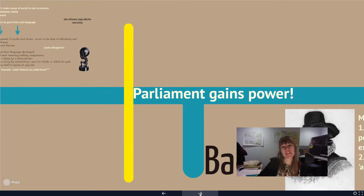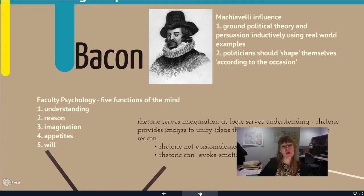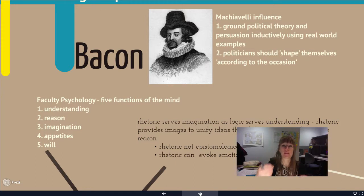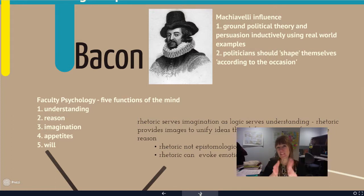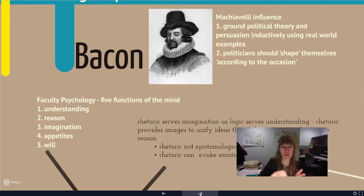Parliament begins to gain power, so we've got people running the government again. Now we need to understand how people function for very specific reasons. Bacon kind of kicks us off into faculty psychology. So what is the function of the mind? We now all agree that the mind exists and that we understand the world through language. We have sensory input that we turn into language, and that language helps us do something with it. But we still have this divide between rhetoric and logic — rhetoric is still not epistemological.